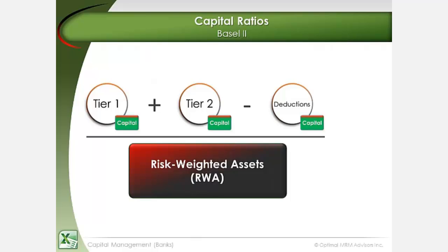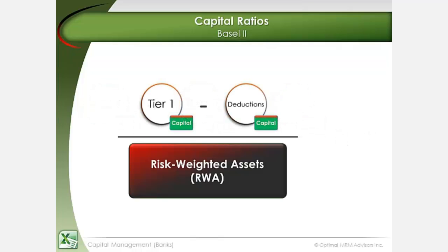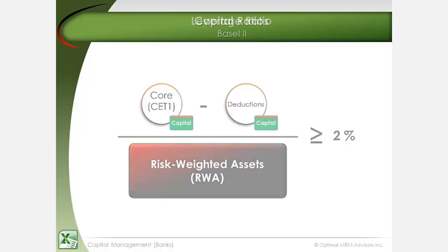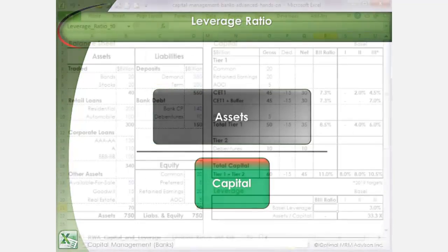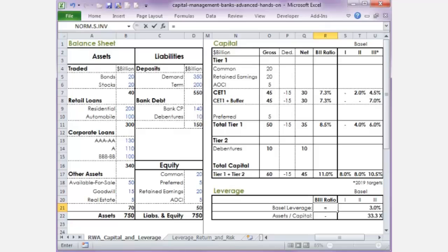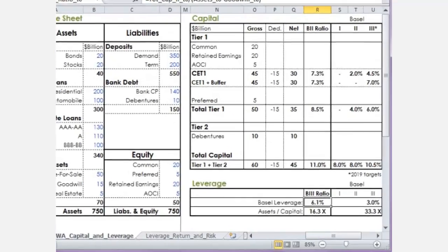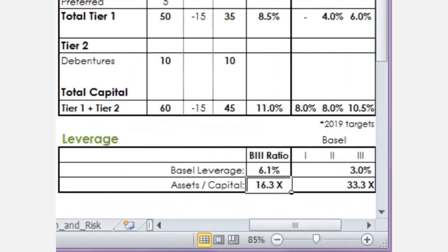Under Basel II, banks are required to hold a minimum total capital ratio of 8% of their RWA, of which tier 1 capital is at minimum 4%, and core or CET1 capital is at minimum 2%. Leverage can be expressed in terms of the ratio of assets to capital. Leverage is defined in Basel III as the ratio of total capital to assets. The inverse of this ratio is the assets-to-capital multiple. Basel's 3% minimum leverage ratio means that the size of a bank's assets cannot be more than 33 times its capital.